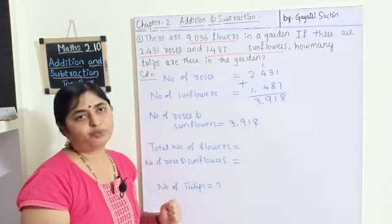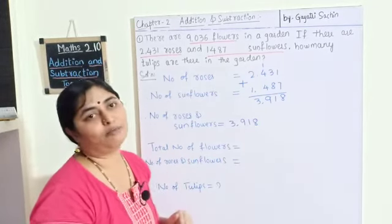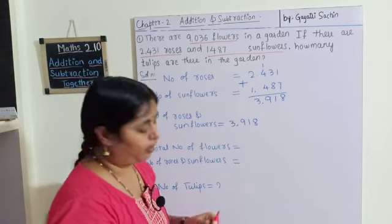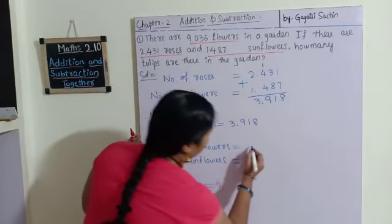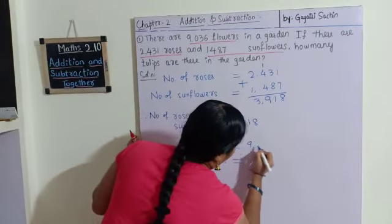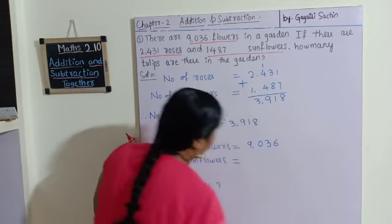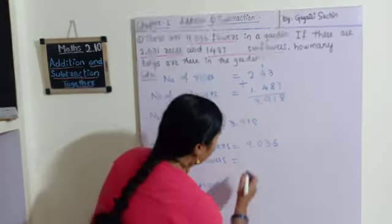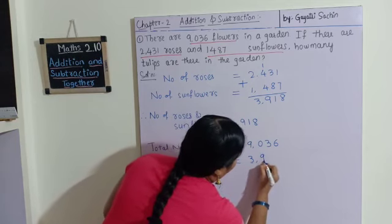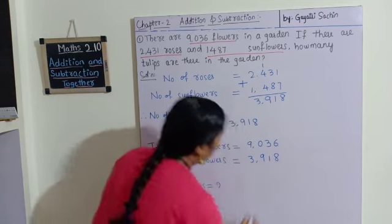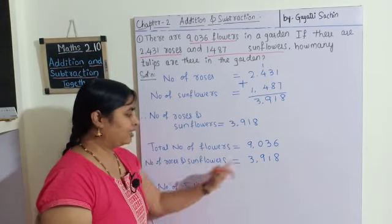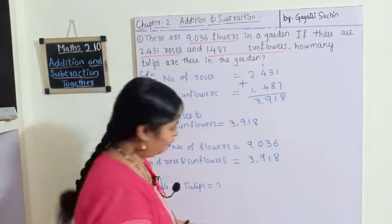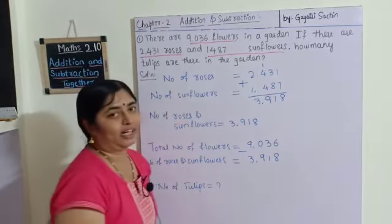To find the number of tulips, we have to do a different sum. The total number of flowers is 9036. We found that the number of roses and sunflowers combined is 3918. So by subtracting roses and sunflowers from the total, we will get the remaining flowers, which are tulips.